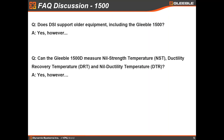Can the 1500D measure nil strength temperature (NST), or DRT and DTR? Yes, it can. However, you will need some apparatus or equipment that probably came with the machine when you originally purchased it. So if you're still running a 1500, chances are you're taking very good care of it and you probably still have that equipment handy. If you don't, reach out to Jake. We probably can't sell a new apparatus, but the machine is capable of doing that.